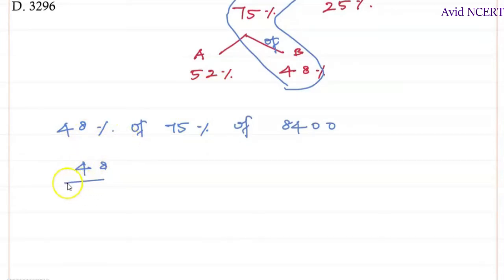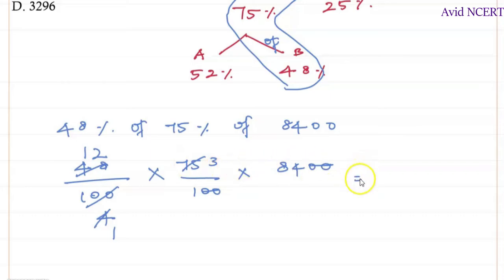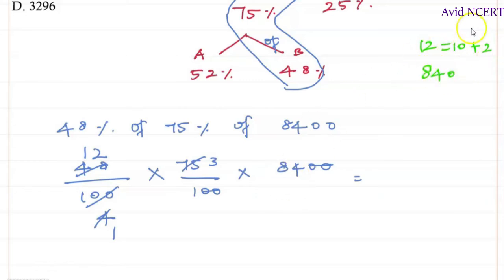Simplifying: 48 over 100 times 75 over 100 times 8400. The hundreds cancel, and simplifying further: 25 goes into 75 three times, 25 goes into 100 four times, giving us 84 times 12. We can break 12 into 10 plus 2, so 84 times 10 is 840, plus 84 times 2 which is 168.